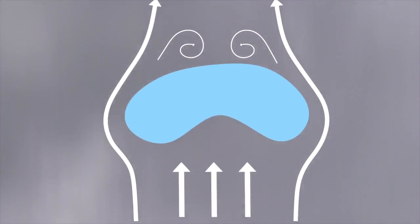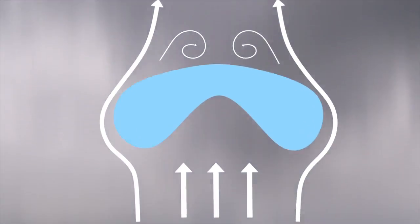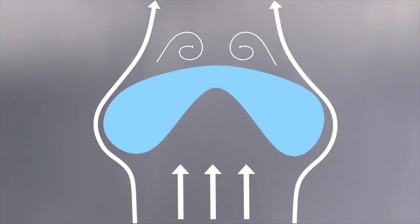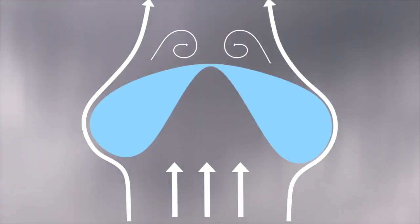As the drop continues to fall and grow, at some point it becomes too large for the surface tension to hold it together. So the raindrop breaks apart into smaller, spherical drops.